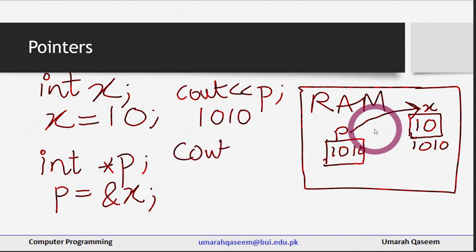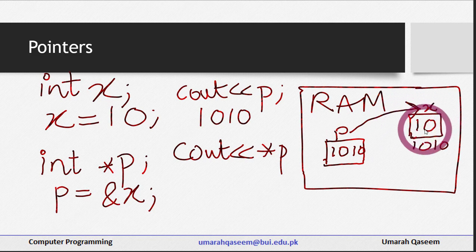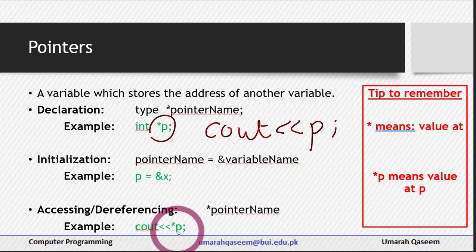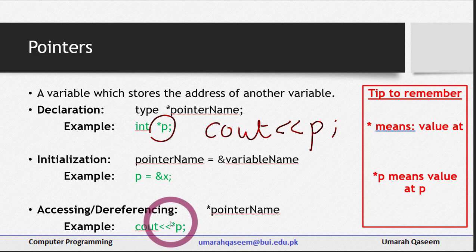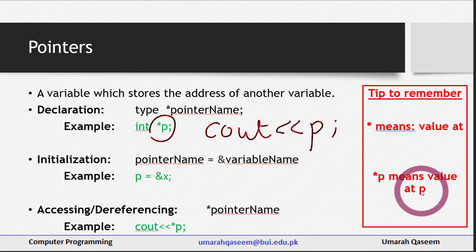So for that, what we do is we write cout << *p. What will happen is whatever is present at the location p is pointing to, that will be printed — the value at that location. This is called accessing or dereferencing a pointer. By dereferencing, we mean getting the value at the address stored in p. And there's a very interesting tip to remember this: the asterisk (*) actually means 'value at'. So think of *p as 'value at p' — not the address stored in p, but the value at that address.